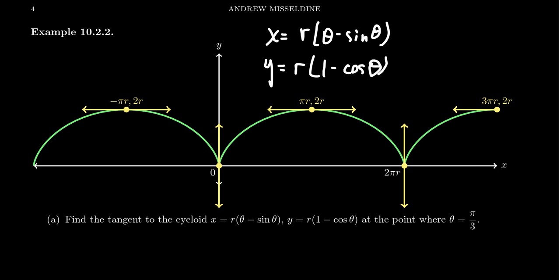And so what I want to do is do some type of curve sketching analysis of the cycloid using this parameterization. Can we find the tangent line of the cycloid at the point theta equals pi thirds? So at the parameter pi thirds, what would the tangent line look like?